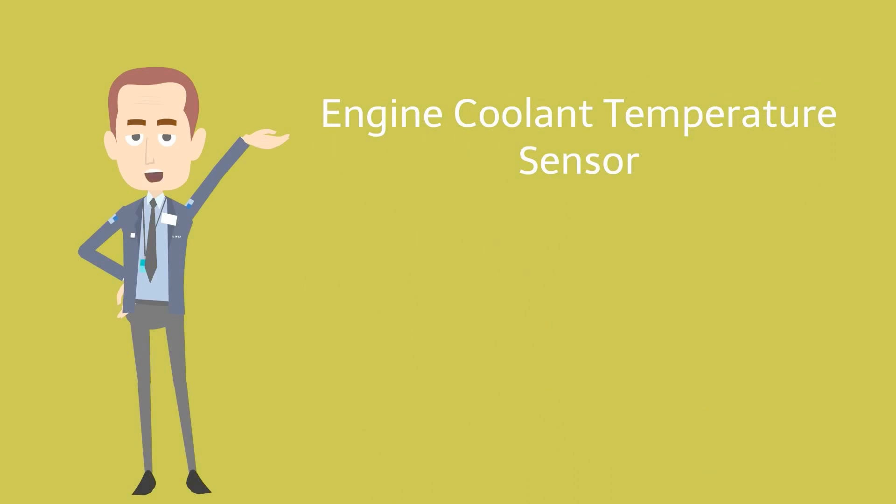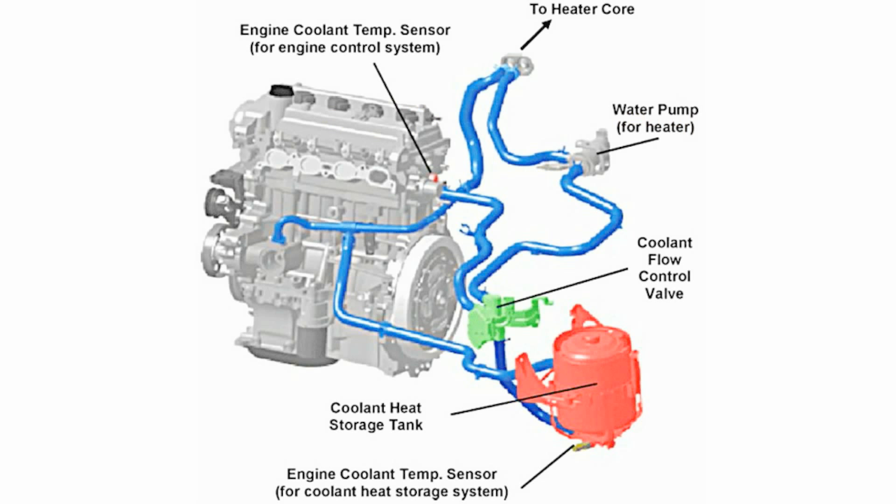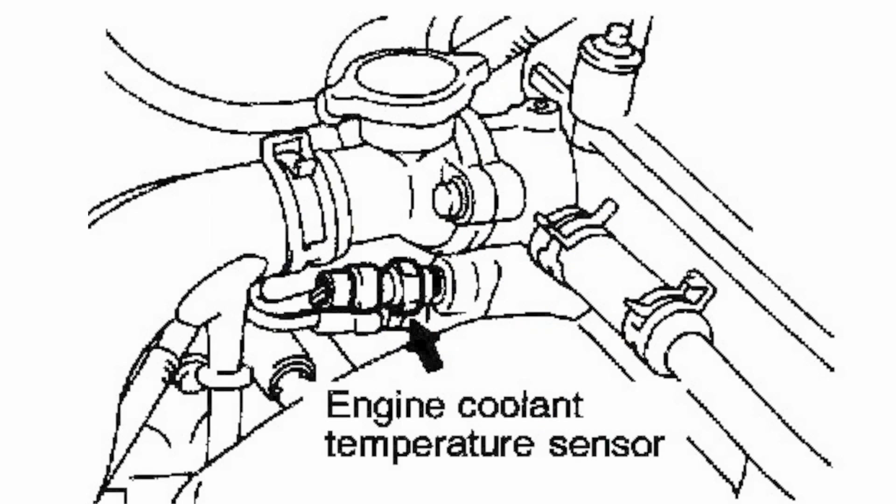Engine Coolant Temperature Sensor. Its function is to instruct radiator fan to turn on and cool down the liquid after getting temperature above 75 degrees. It is usually located at the bottom of radiator or top radiator hose towards engine block.